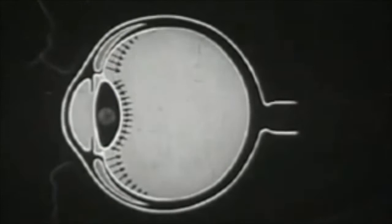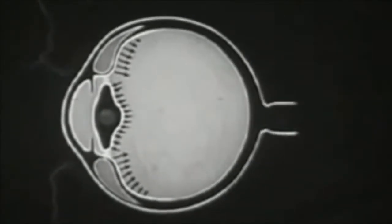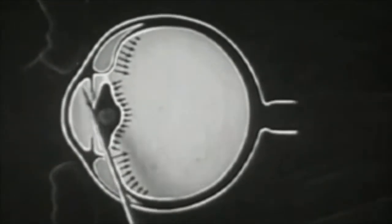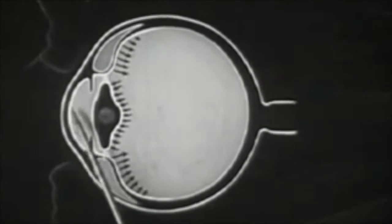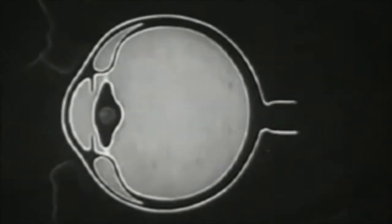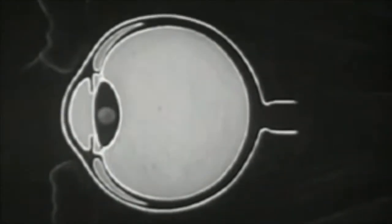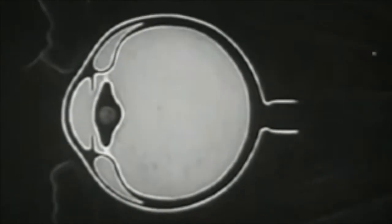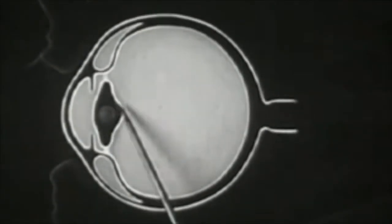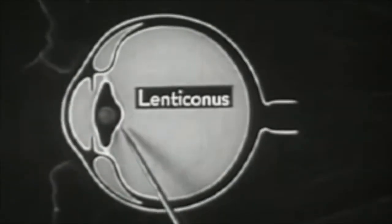Now the lens as a whole cannot give way against the equally non-elastic aqueous humor and its confining cornea, so the only part which can possibly yield to the pressure of the vitreous humor is the soft substance of the lens. This lens substance is thus molded into an even curve against the rigid ball-shaped core, forming this highly convex bulge which science has called lenticonus.